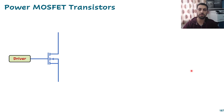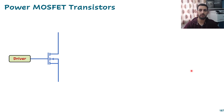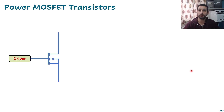Hi, this is a continuation of Power Electronics Lectures and we are going to continue talking about MOSFET transistors and switching. In the first part I discussed the MOSFET transistor structure, their properties, the complication in switching on MOSFETs, how to compute the current needed for charging the capacitance, and why we use gate drivers. MOSFETs are now more popular than other switches.